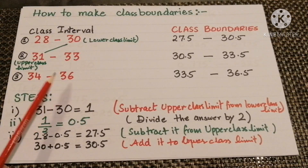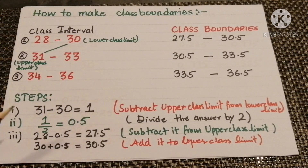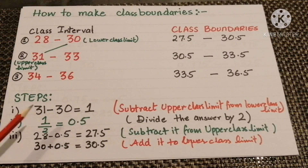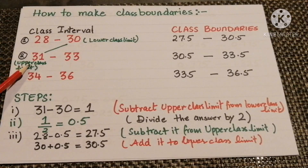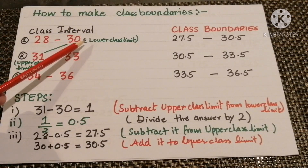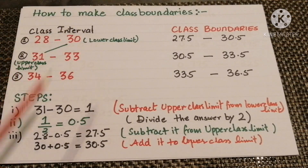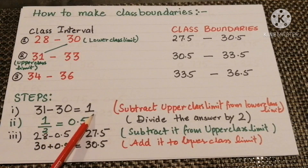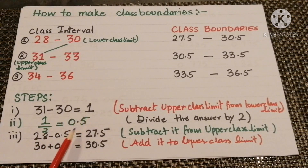The third interval is 34 and 36, where 34 is the lower class limit and 36 is the upper class limit. To make the class boundaries, we follow some steps. We subtract the upper class limit of the first class interval from the lower class limit of the second class interval: 31 minus 30 gives us 1.